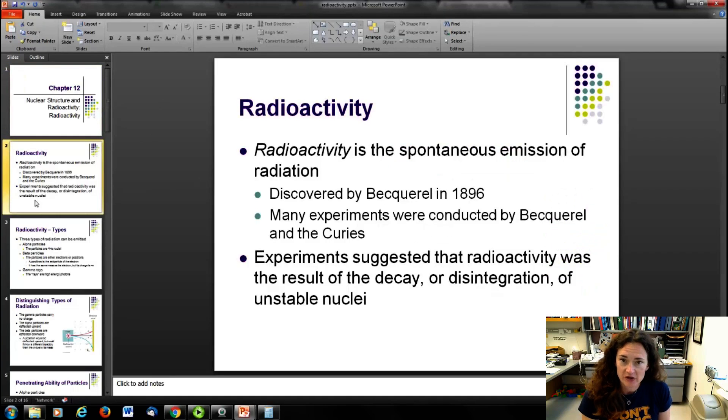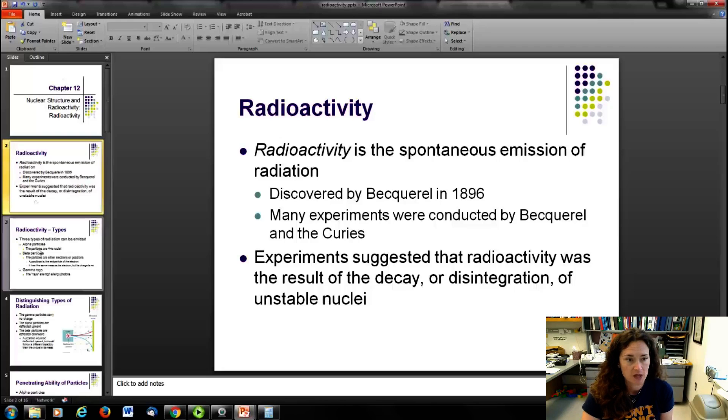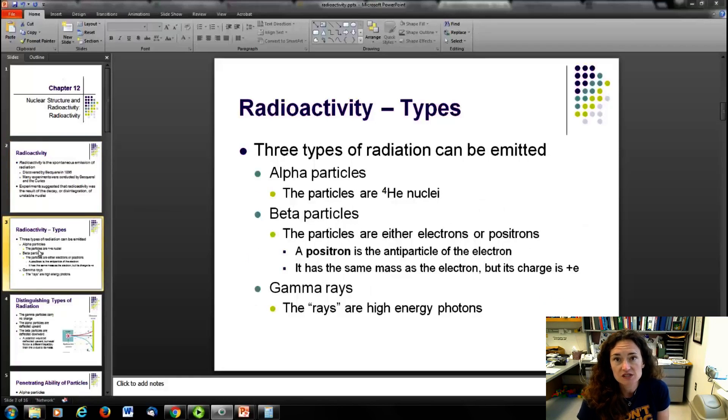Radioactivity is the emission of radiation discovered by Becquerel in 1896 with lots of experiments conducted by Becquerel and the Curies. The experiments showed that the radioactivity was the result of the decay or disintegration of unstable nuclei. The three sources of radiation are alpha radiation, beta radiation, and gamma radiation.